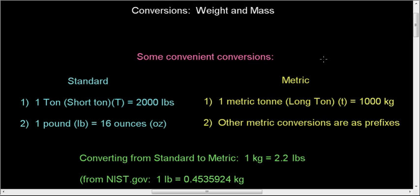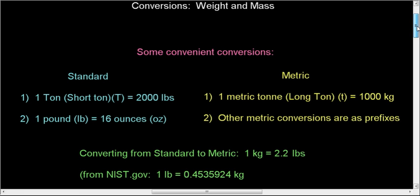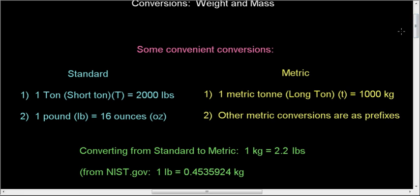In this video we're going to take a look at conversions of weight and mass, looking at standard and metric, and the conversion between the two. In the blue we have the standard measurements, and we have one ton is 2,000 pounds. This is also known as the short ton, and you'll see why when we go to the metric and have the conversion from standard to metric.